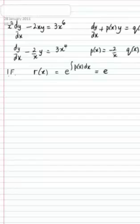Which, in this example, is e to the integral of minus 2 over x dx. Which is e to the minus 2 natural logarithm of x. And when we're finding an integrating factor, we don't need a constant of integration.